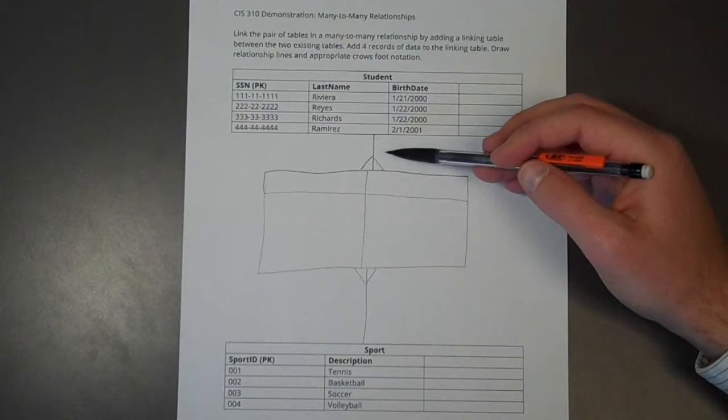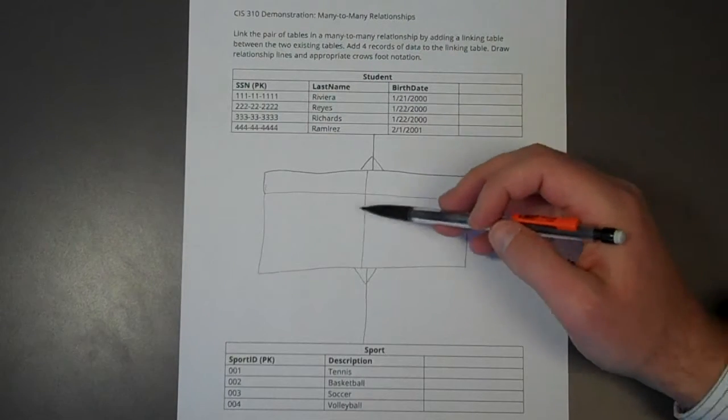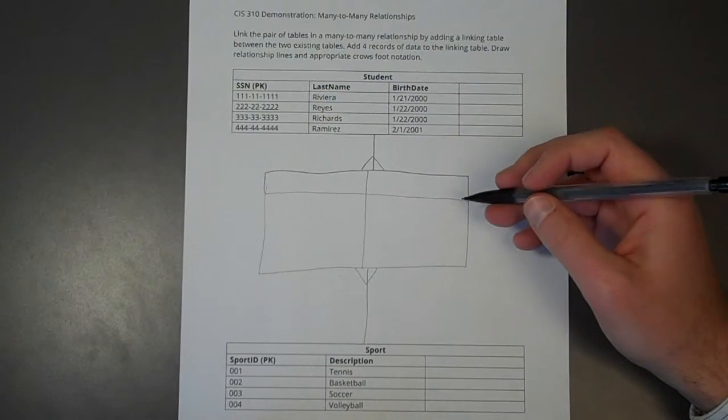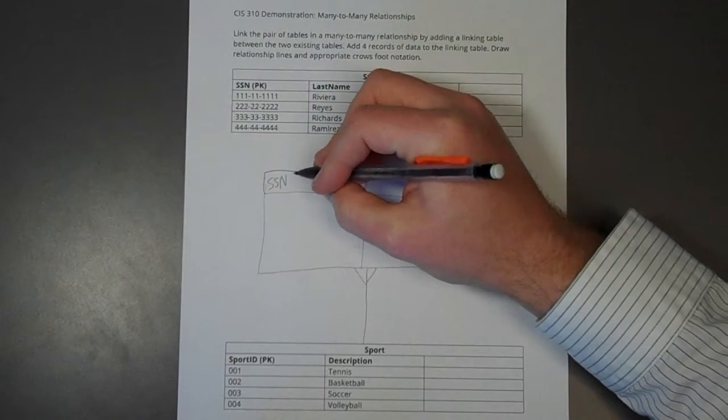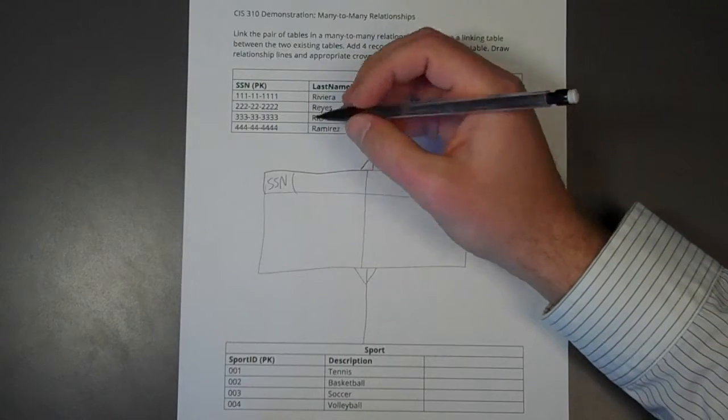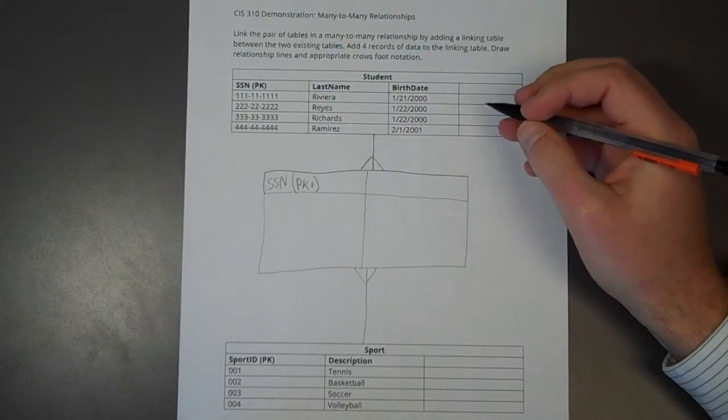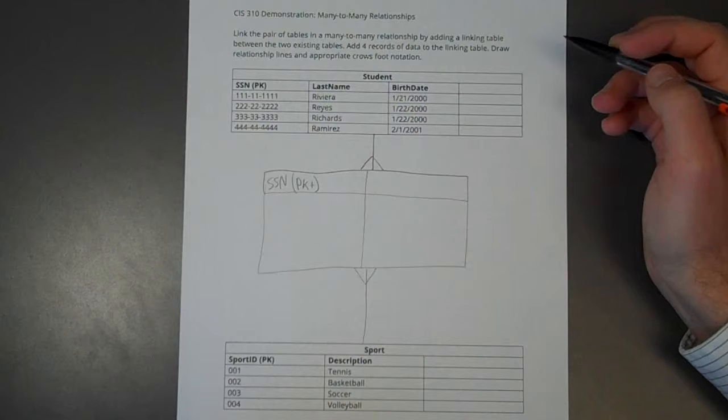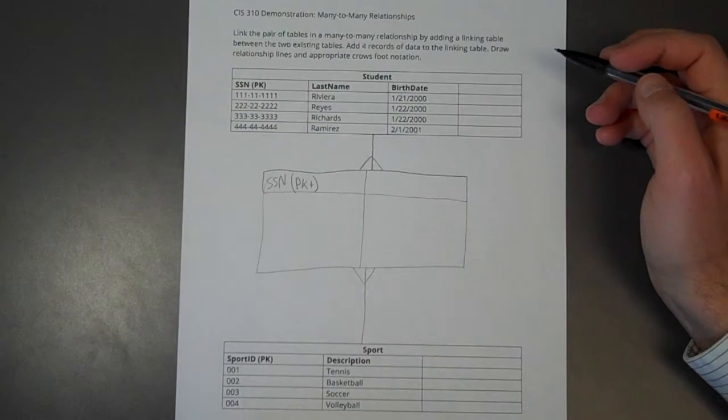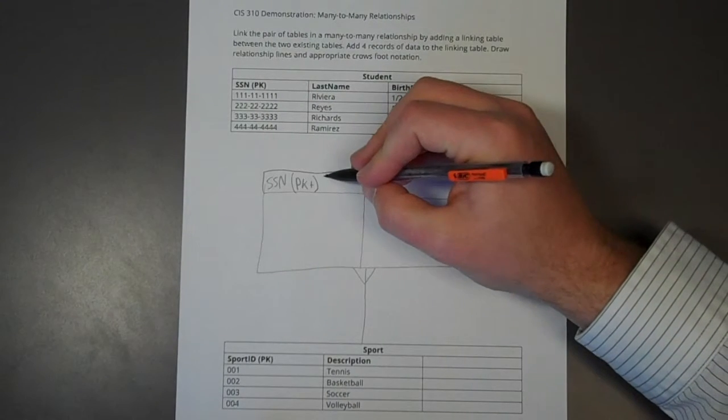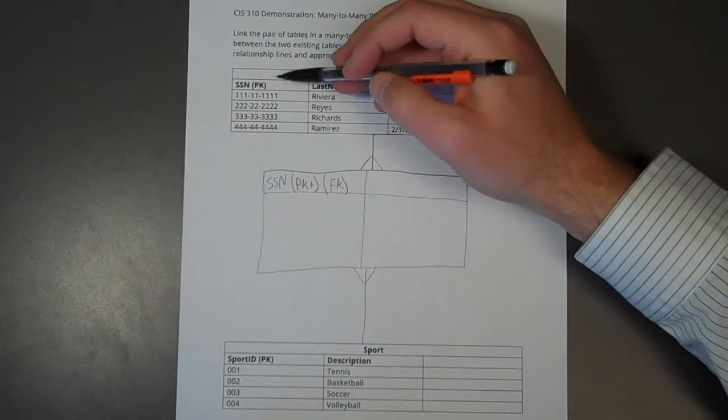So let's start with student. The primary key of student is social security number. That means it needs to be a foreign key inside of my linking table or my junction table. So let's put that here. That's going to be SSN. And SSN is both a foreign key and a member of the primary key. I'm going to denote that here. PK plus means that this is a component of a composite key.